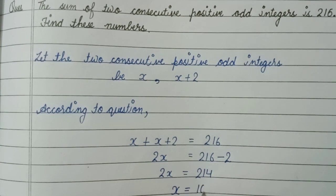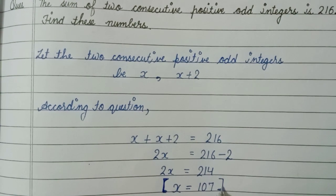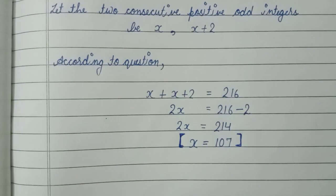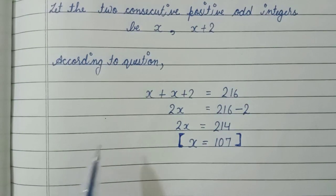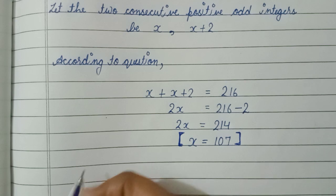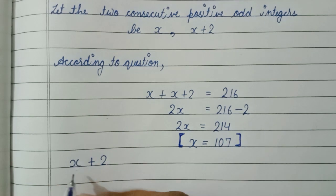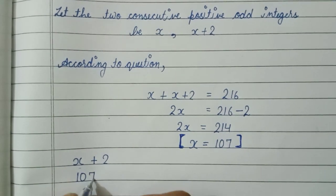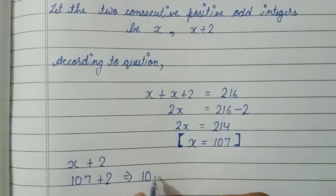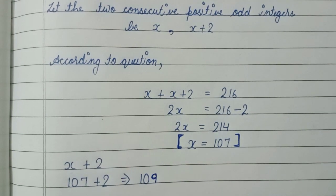So this is our first integer, 107. Now find the second integer which is x plus 2. Put the value of x, which is 107 plus 2, which equals 109. So this is the second consecutive odd integer.